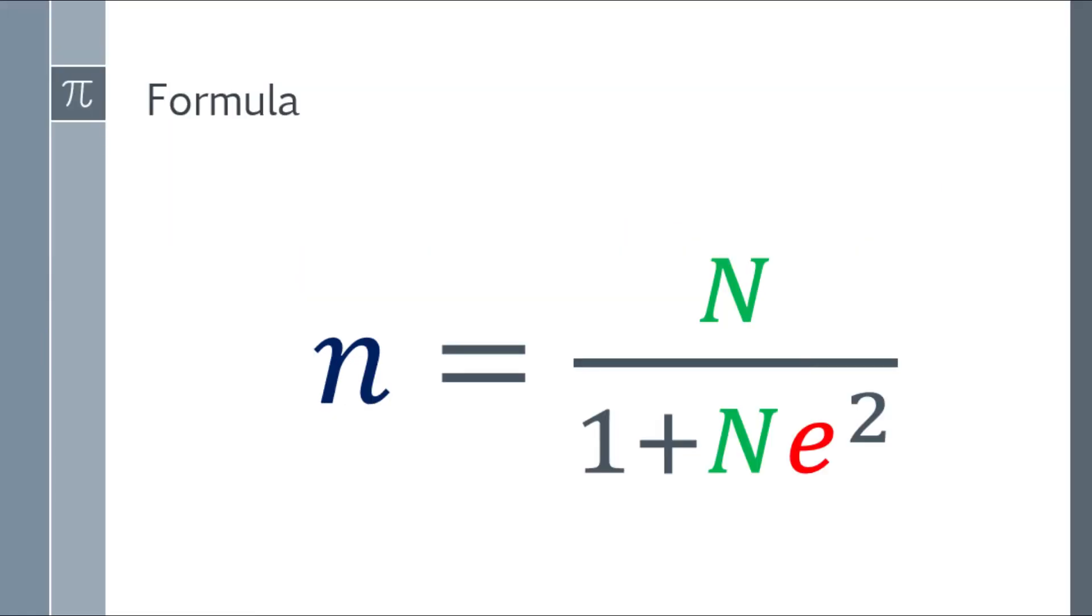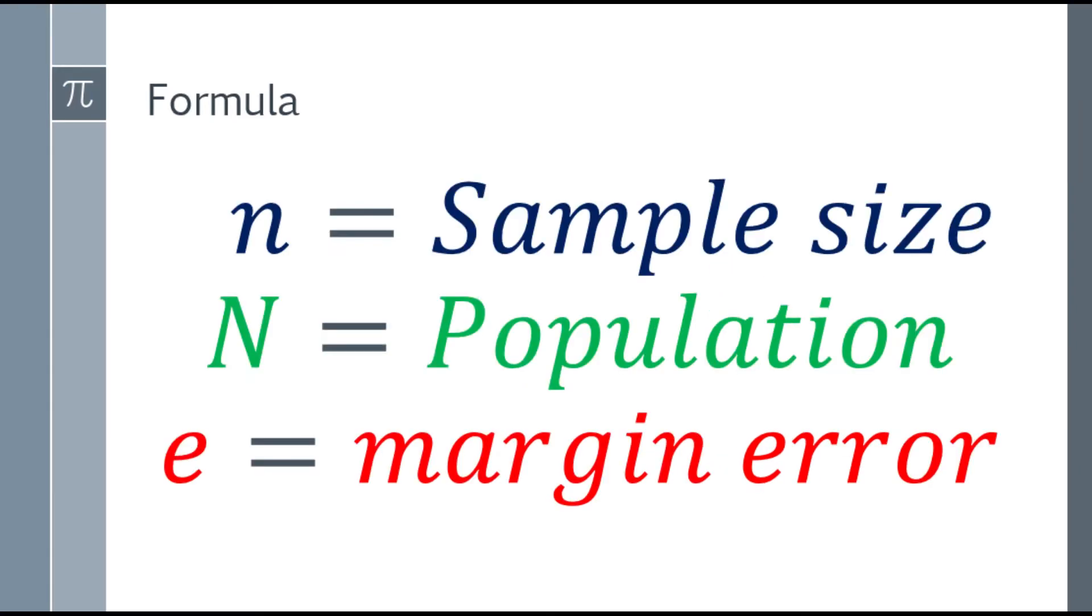Now for the formula for the sample size, it represents the small letter n. So n is equal to the capital N, which is the population size, over the quantity 1 plus capital N times E square. So the small letter n will represent the sample size, the capital N will be the population, and the small e will be the margin error.